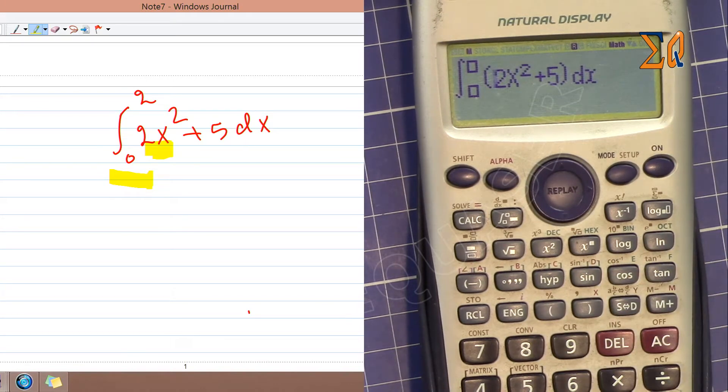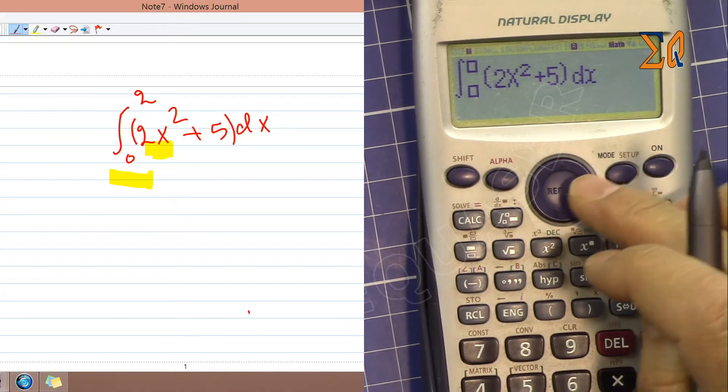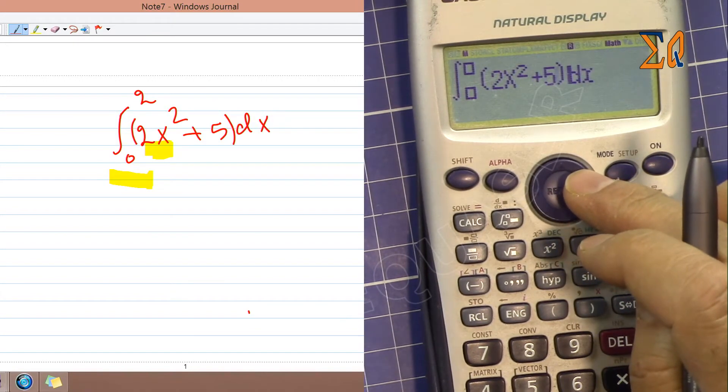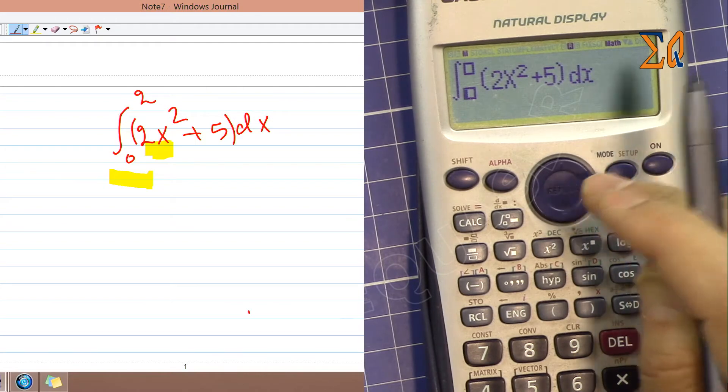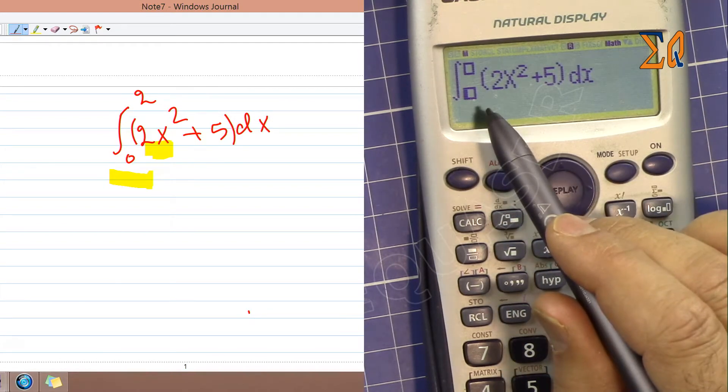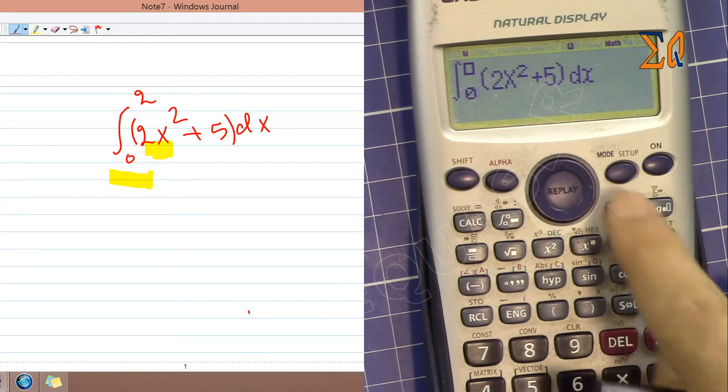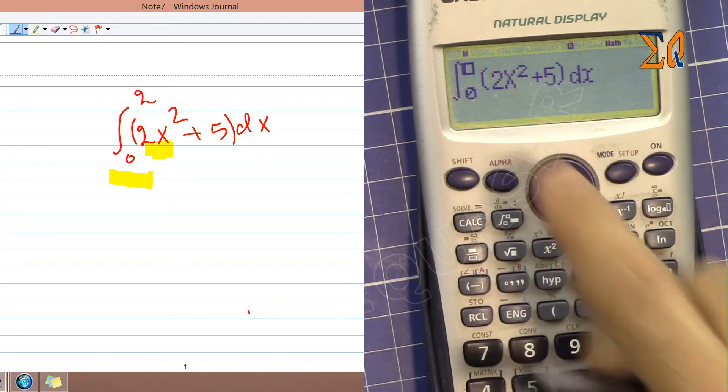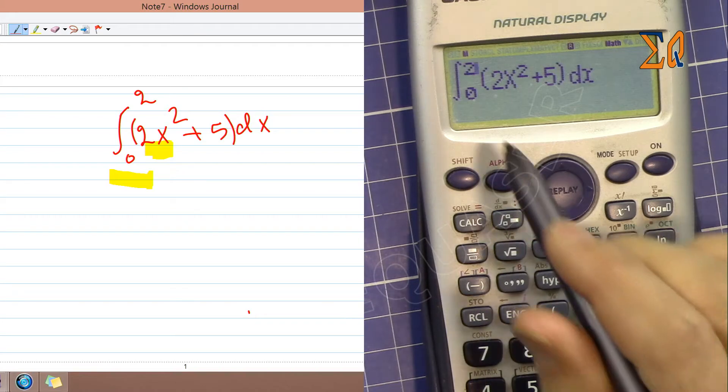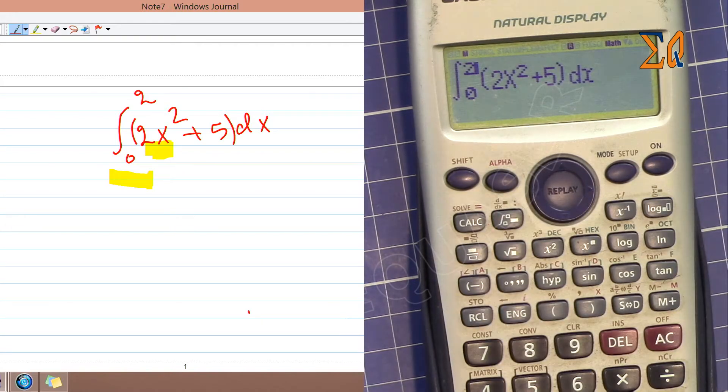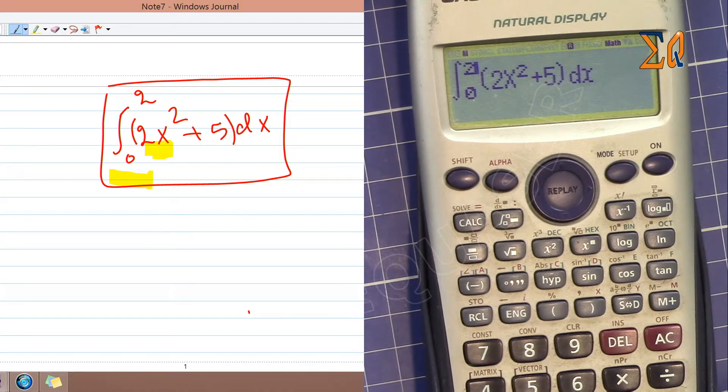If you want to be correct, we can add parentheses here. Now with the arrow, go to the right after dx. When you go right, it comes to the lower bound, which is 0. Then go right again, it goes up, and enter 2. That's exactly as I have in my equation. Press equal sign.